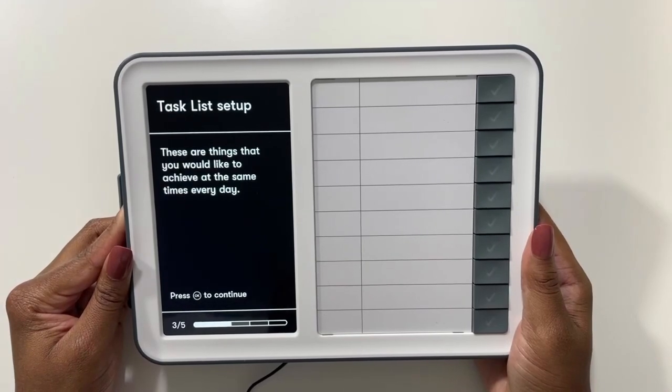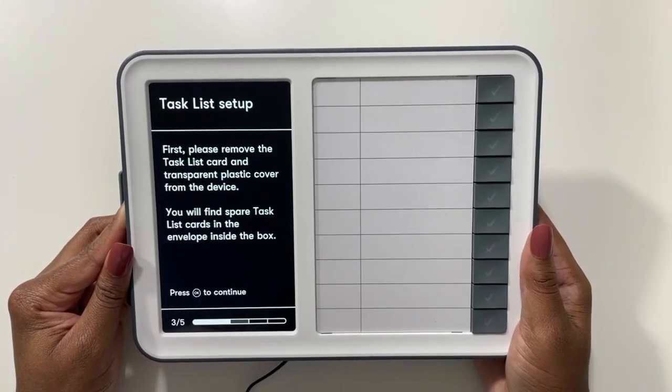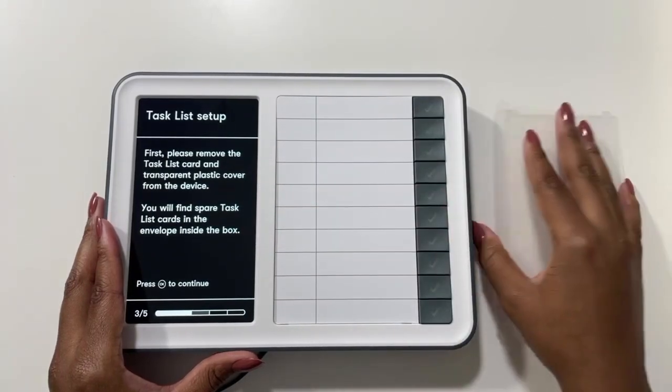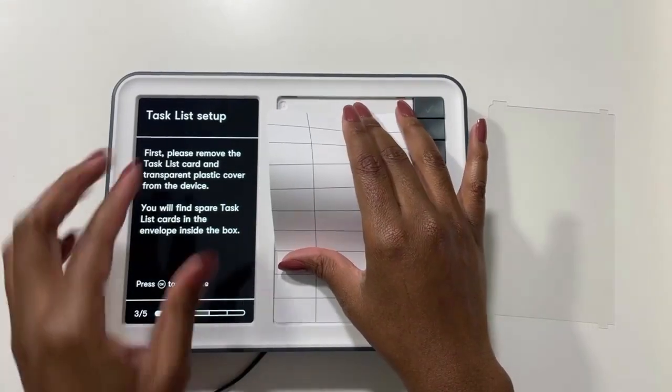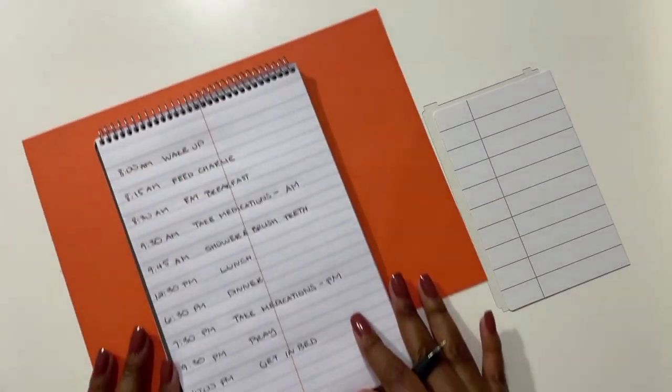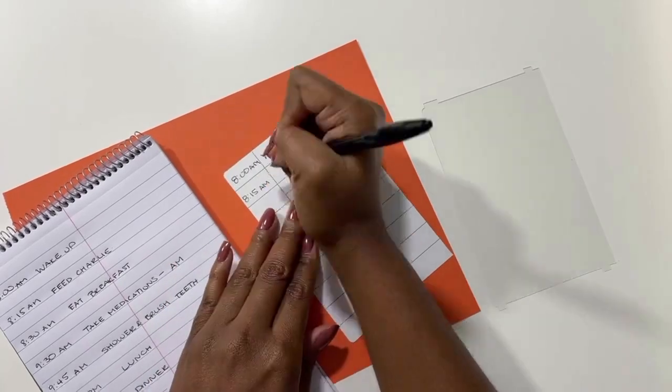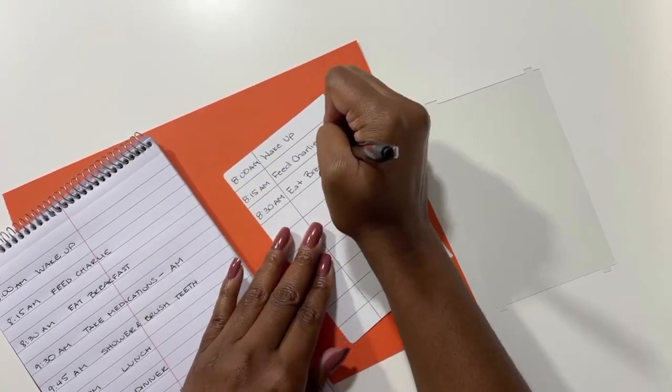Now it's time to set up our task list. First we have to remove the plastic cover and the task list from the device. Then what I did is write my tasks down on a scratch piece of paper before writing them on my task list.